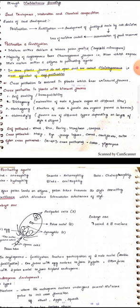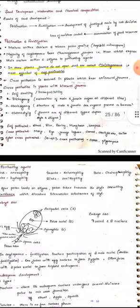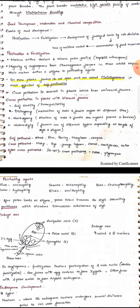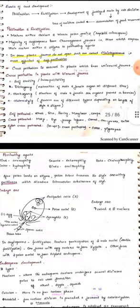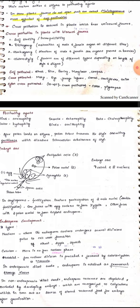Cross-pollination is ensured in plants which bear unisexual flowers. Cross-pollination in plants with bisexual flowers, for this the mechanisms to promote cross-pollination are self-incompatibility or self-sterility, dichogamy. Dichogamy, that is the condition of maturation of male and female organs at different time. Herkogamy is structure of male and female sex organs proves a barrier. Then heterostyly means flowers are of different types depending on length of style and stigma. Here I'll just repeat the mechanisms to boost cross-pollination: self-incompatibility, dichogamy, herkogamy, heterostyly.